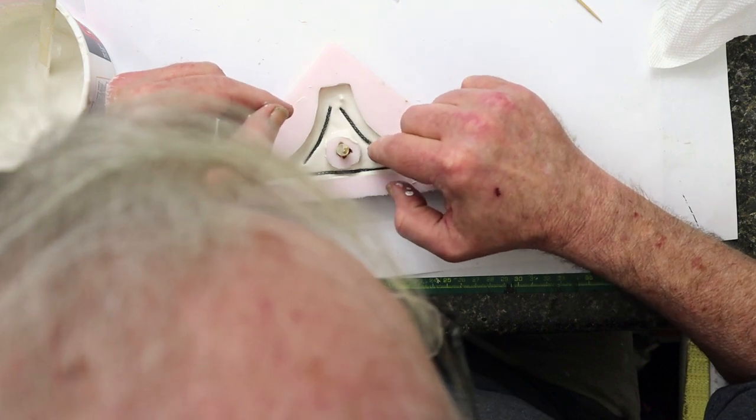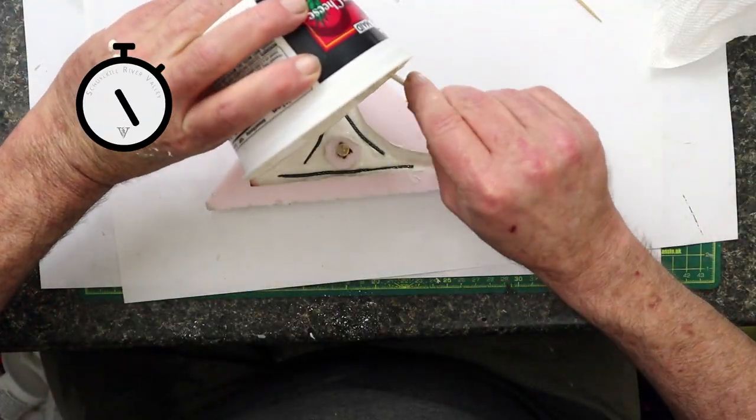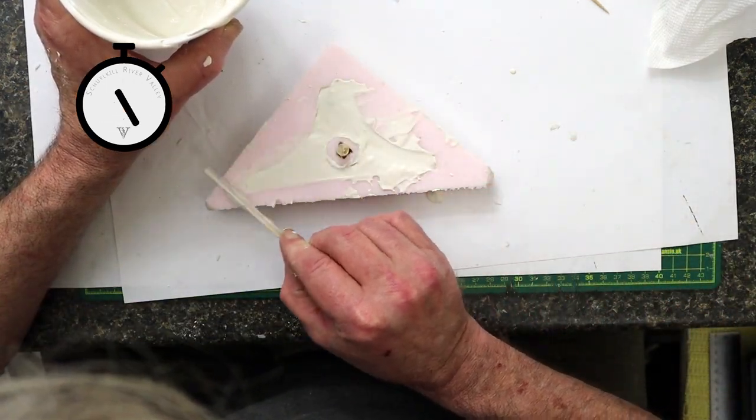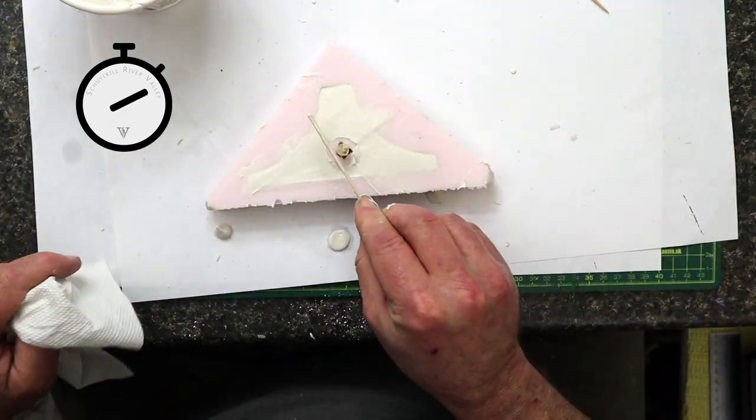It was probably overkill, but I added some rebar to the sides as well, and then filled the mold the rest of the way.